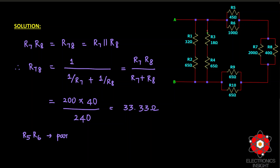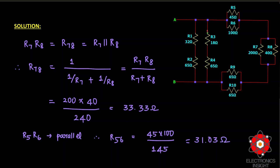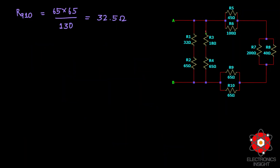Similarly, R5 and R6 are in parallel: 45 × 100 divided by 145, which gives us 31.03 ohms. R9 and R10 are also in parallel, each 65 ohms, giving an equivalent resistance of 32.5 ohms.